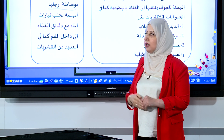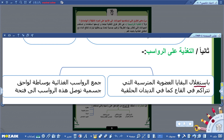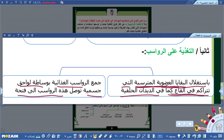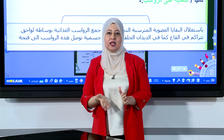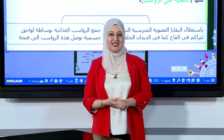الطريقة الأخيرة هي التغذية على الرواسب، حيث تقوم الحيوانات باستغلال البقايا العضوية المترسبة المتراكمة في القاع كما في الديدان الحلقية، وتجمع هذه الرواسب الغذائية بواسطة لواحق جسمية توصلها إلى فتحة دخول الطعام. تعرفنا معاً على طرق التغذية التي تعتمدها الحيوانات، إلى اللقاء في درس مقبل إن شاء الله.